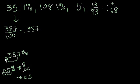So let's get back to the problem. I hope that distraction didn't distract you too much. Let me scratch out all this. So 35.7% is equal to 0.357.